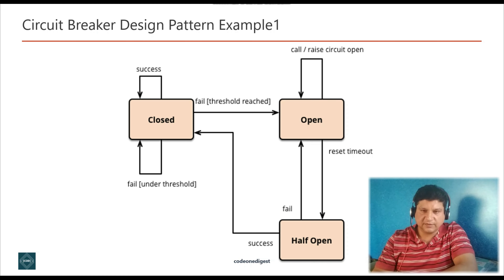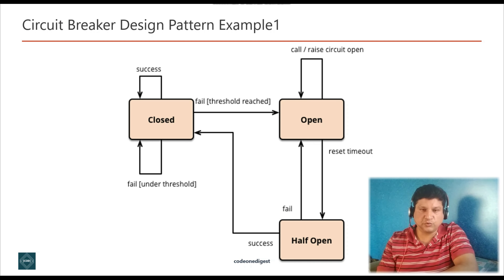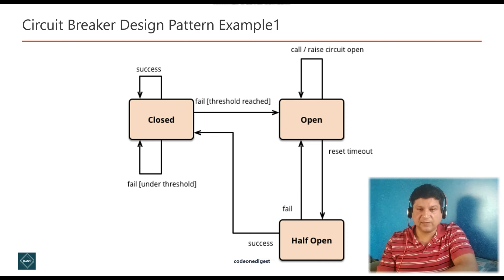Now let's understand circuit breaker design pattern with a real world example. In a distributed environment, calls to remote resources and services can fail due to transient faults such as slow network connections, timeout, or resources being over-committed or temporarily unavailable. These faults typically correct themselves after a short period of time, and a robust cloud application should be prepared to handle them using a strategy such as the retry pattern. However, there can also be situations where faults are due to unanticipated events that might take longer to fix. In this situation, it might be pointless for an application to continuously retry an operation that is unlikely to succeed. Additionally, if a service is very busy, failure in one part of the system might lead to cascading failures in other parts of the application.